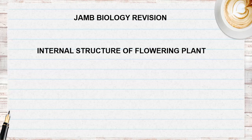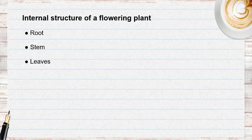Good morning, once again welcome to another class. Today I will be discussing the internal structure of a flowering plant. The first thing we need to know is that there are three organs that make up a flowering plant: the roots, stem, and leaves.